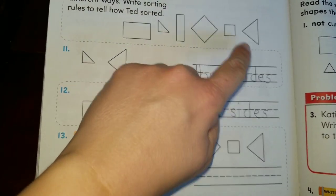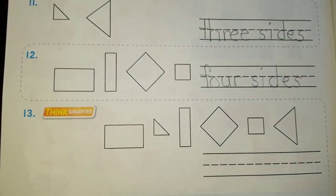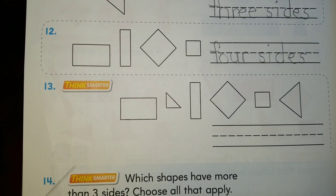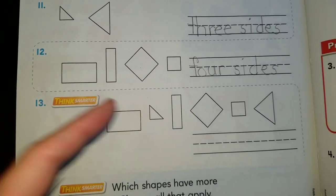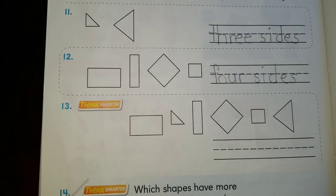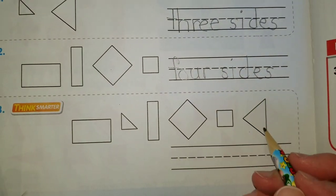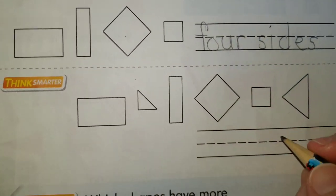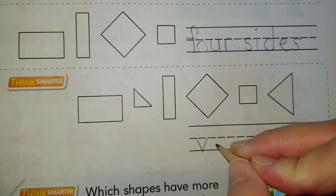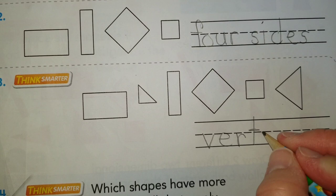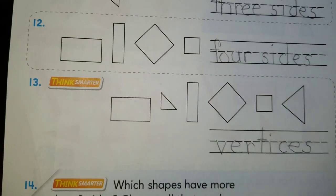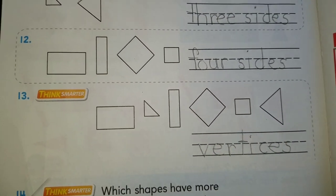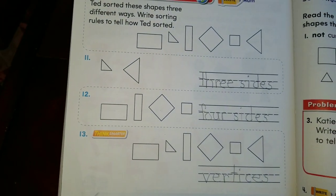Here we have a rectangle, another rectangle, a rhombus, and a square. What is the rule? The rule could be four sides, or four vertices — because if a shape has four sides it also has four vertices. And for the last group Ted put all shapes together. What do they all have in common? You can say all these shapes are closed, or you can say all these shapes have vertices. The only shapes that don't have vertices are circles and ovals.